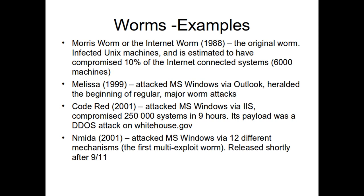Then there's Nimda — if you read it backwards it's Admin, which is assumed to be where the name came from. This happened the same year as Code Red, just after 9/11, so there was some concern it was a new phase of terrorism. The interesting thing about Nimda is it used 12 different exploits — the first known multi-exploit worm. Basically, if one approach didn't work it would try another. It could also do file infection, acting as a virus as well, infecting files and executables. Nimda was nasty, and these are historically significant examples.